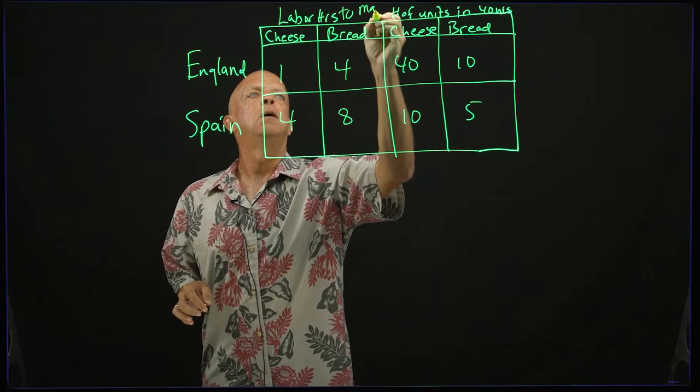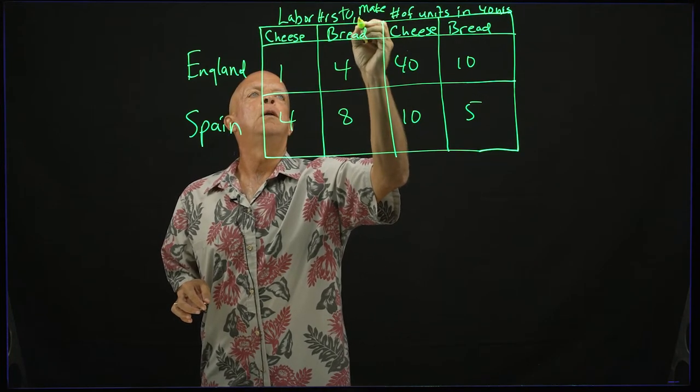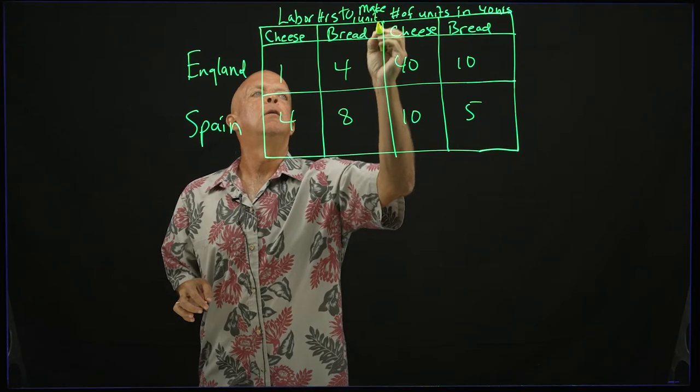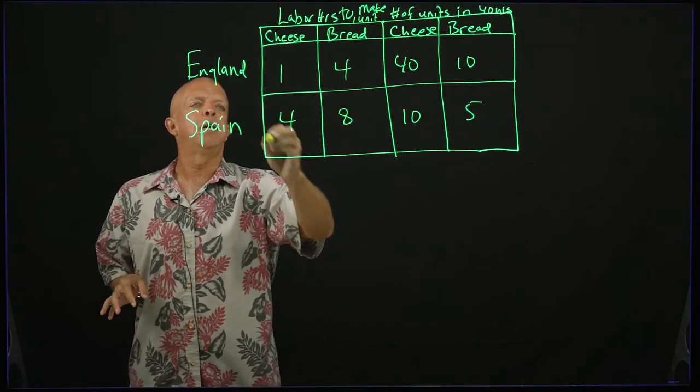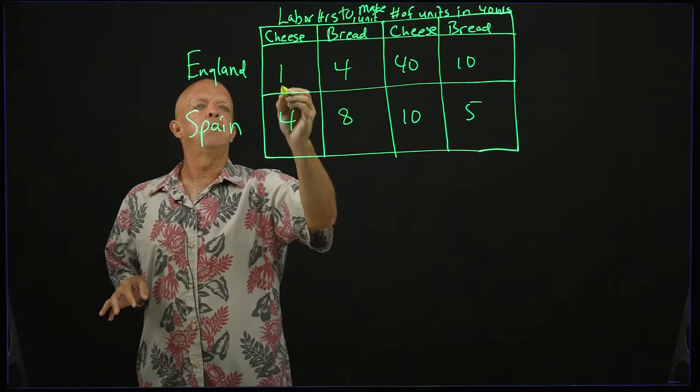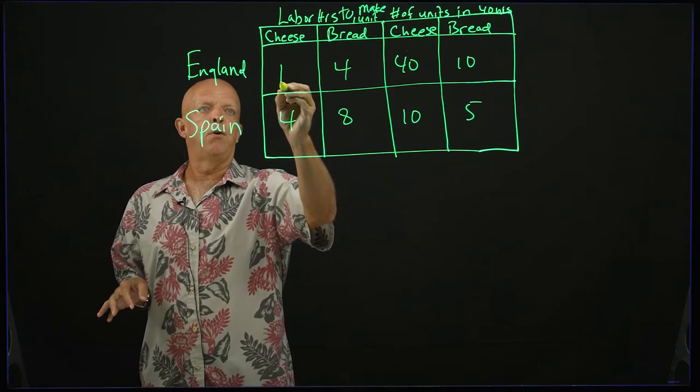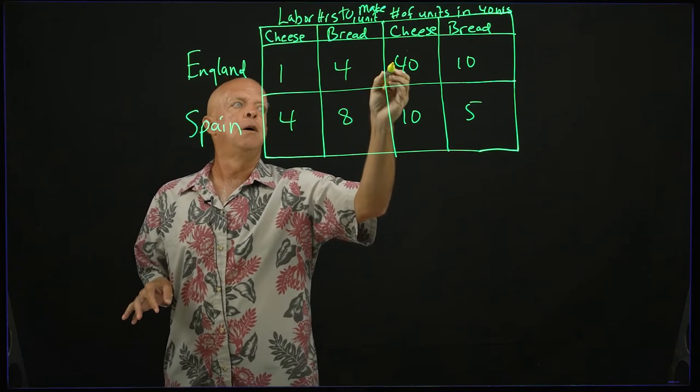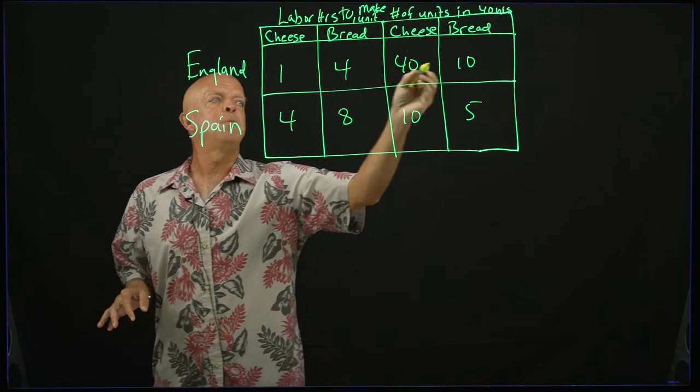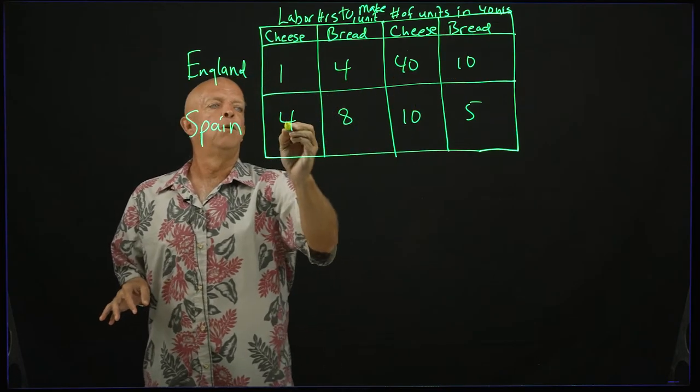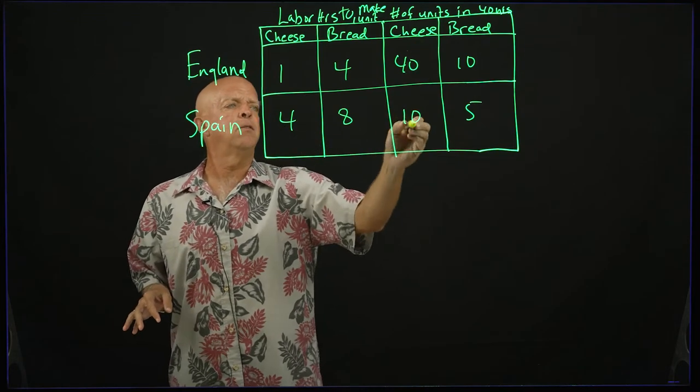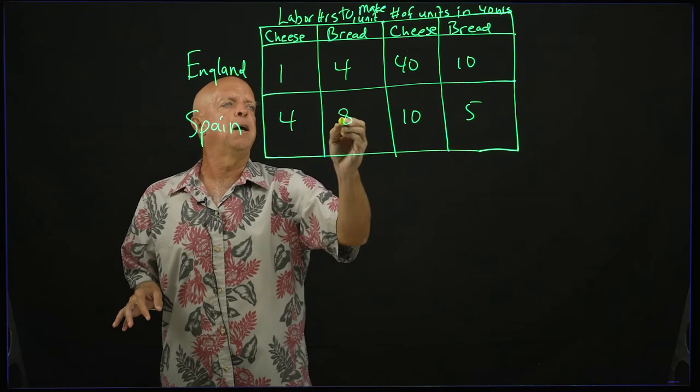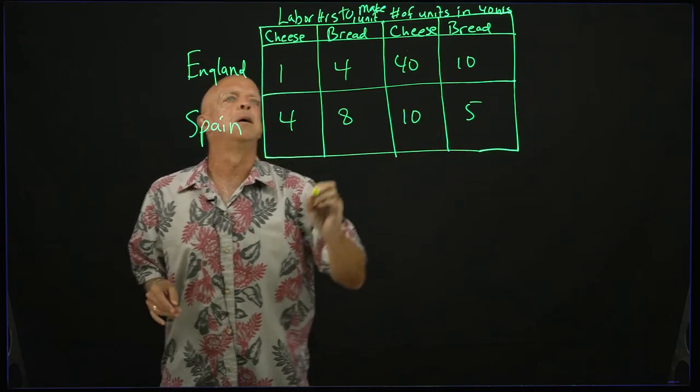make one unit of, and then the number of units in 40 hours. So you take this number, and then you times it by, in this case, whatever it takes to get 40. One times 40 gets 40. Four times 10 is 40. Four times 10 is 40. Eight times five is 40.